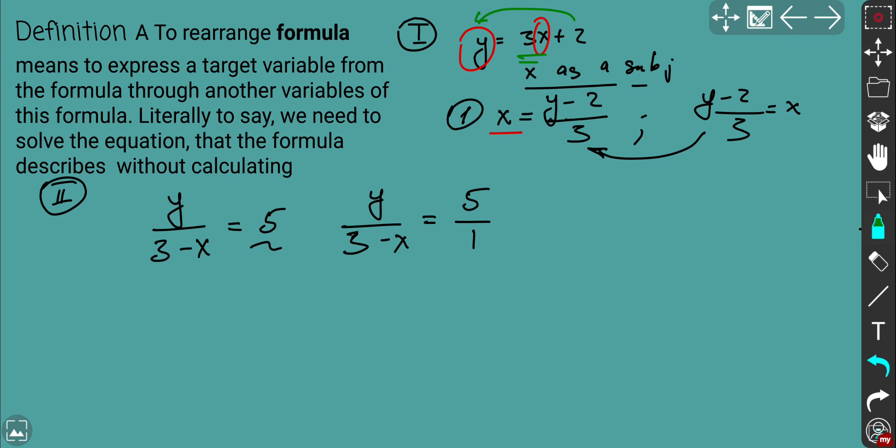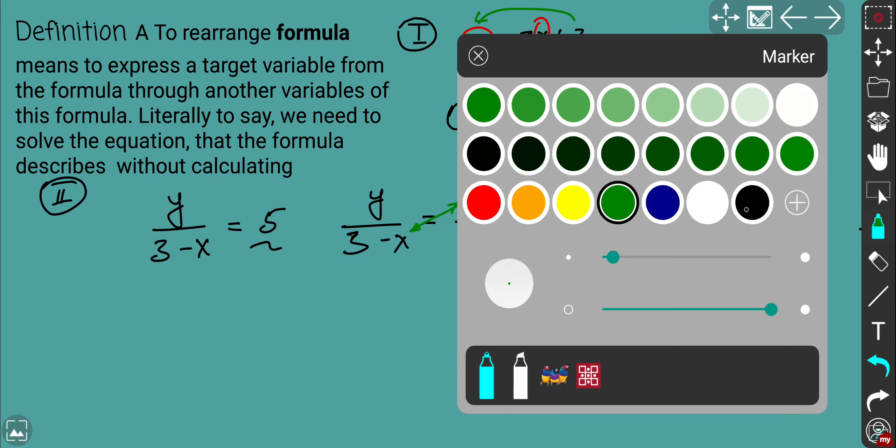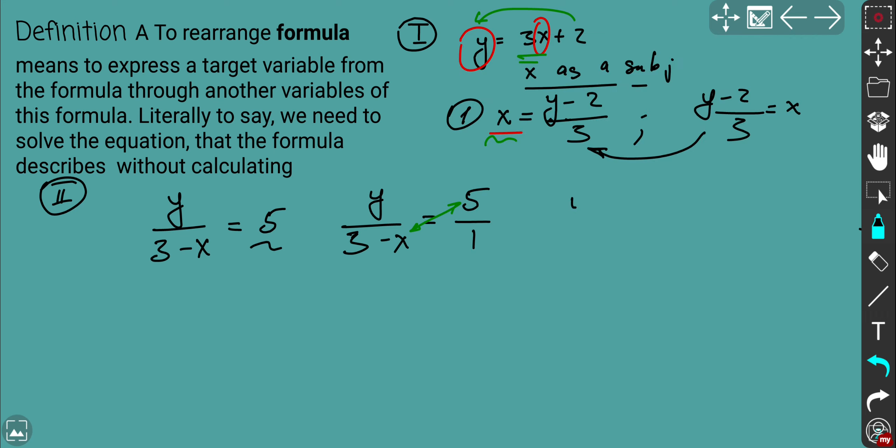What are you going to do right now? You swap 3 minus x with 5. That's the general way, because finally, you need to stay with x equals as in the previous one. First of all, you need to lift up your 3 minus x on top. So basically, you put 5 down. So if you swap with 5, you'll get y over 5, because you swap 5 and 3 minus x. And on the right side, you will have 3 minus x over 1, or literally say just 3 minus x.